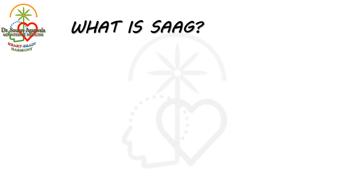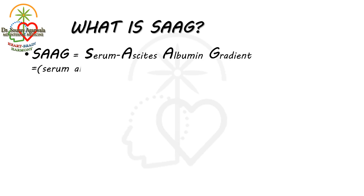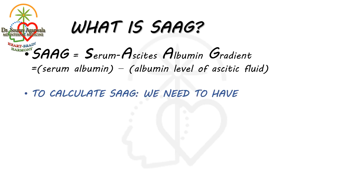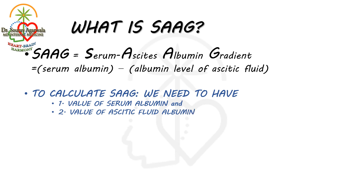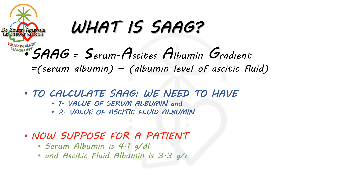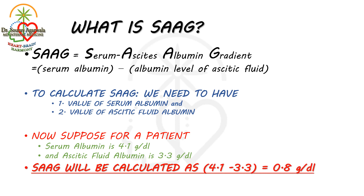First of all, we need to know what SAAG actually is. It is nothing but the difference or gradient between serum albumin level and ascites albumin level. To calculate SAAG we need two things: the value of serum albumin and the value of ascites albumin. For example, if serum albumin is 4.1 and ascites albumin is 3.3, then SAAG equals 4.1 minus 3.3, that is 0.8 gram per deciliter.